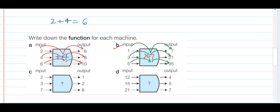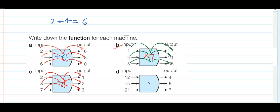For part C, the answer is minus 1. We put minus 1 and check: 2 minus 1 is 1 — it is working. 3 minus 1 is 2 — it is working. And 7 minus 1 is 6 — it is working.